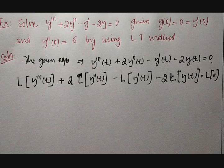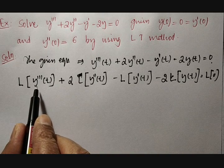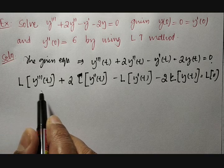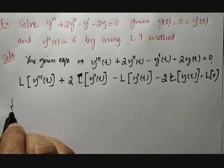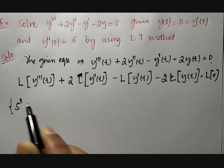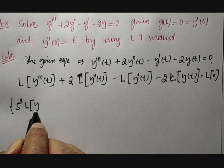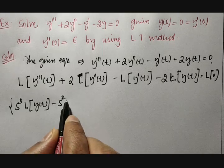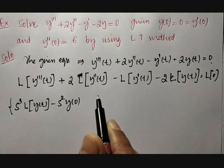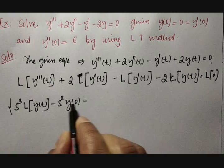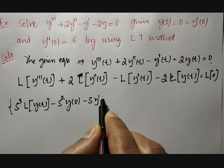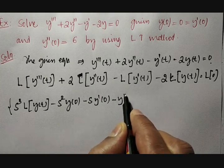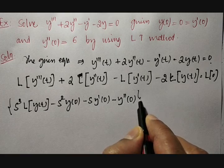Then it becomes: Laplace transformation of y triple dash of t, plus 2 times Laplace transformation of y double dash of t, minus Laplace transformation of y dash of t, minus 2 times Laplace transformation of y of t, equal to 0. Since it is of third order, the Laplace transformation of the third order derivative starts from s cube. So write s cube into L{y(t)} minus s squared times y(0) minus s times y dash(0) minus y double dash(0).